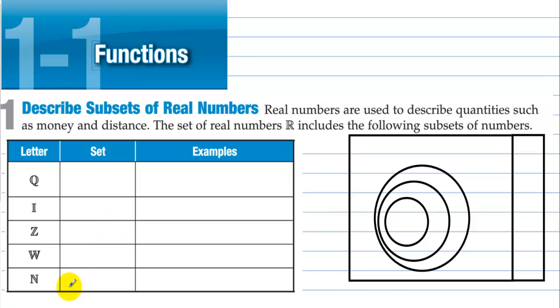We have the natural numbers, which are the counting numbers: one, two, three, four, and so on. So we put the naturals here.